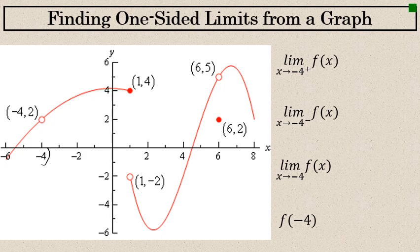Finally, let's take a look at the x value of negative 4 and evaluate the limits as x approaches negative 4 from the left and right. From the right, this is similar to the limit as x approaches 6 from the right. The limit as x approaches negative 4 from the right is approaching a point — it doesn't get to that point, as designated by the open circle — but it's approaching a point with a y value of 2. The limit as x approaches negative 4 from the right is 2.